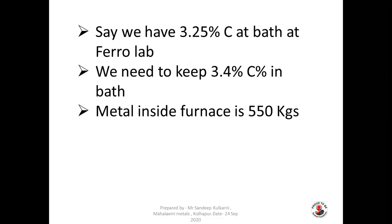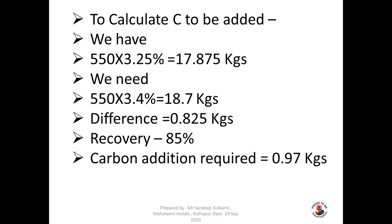Let us start with the first example: 3.25% of carbon is available in the bath whereas we need 3.4% of carbon — so we have to increase carbon by 0.15%. We have around 550 kg of metal in the furnace. To calculate the addition: 550 × 3.25% = 17.875 kg of carbon available. We require 550 × 3.4% = 18.7 kg. The difference is 0.825 kg of carbon, so we have to add 0.825 kg of carbon to achieve 3.4%.